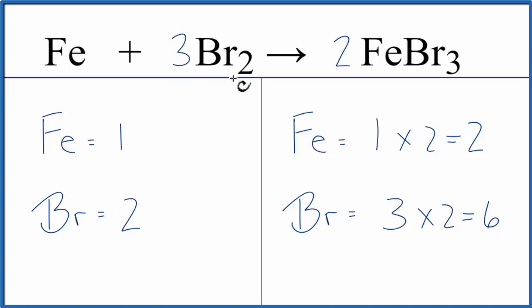If I put 3 as my coefficient in front of Br2, 2 times 3, that gives me 6. So I've balanced the bromines.